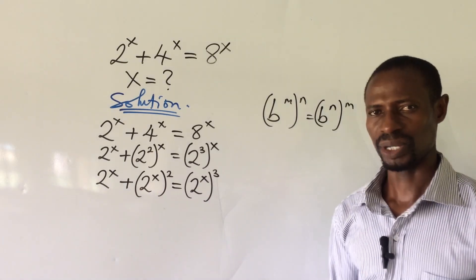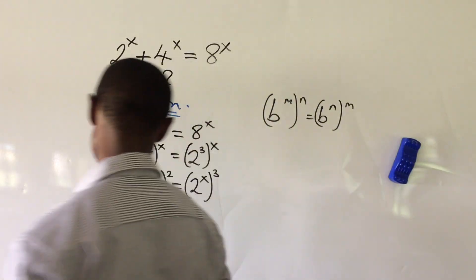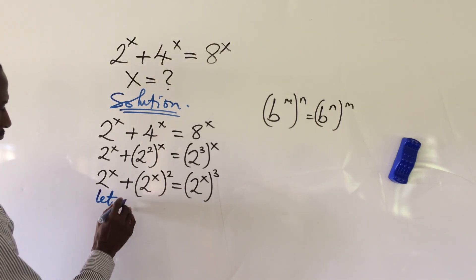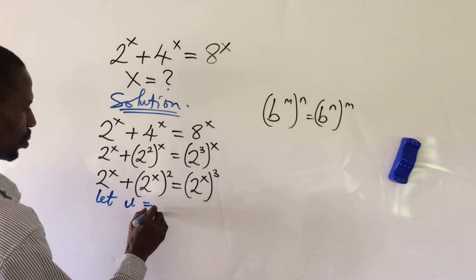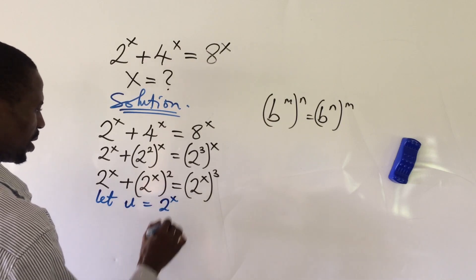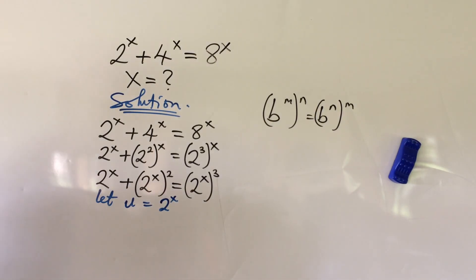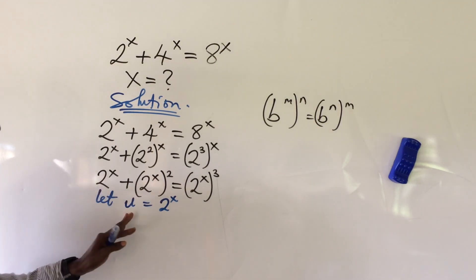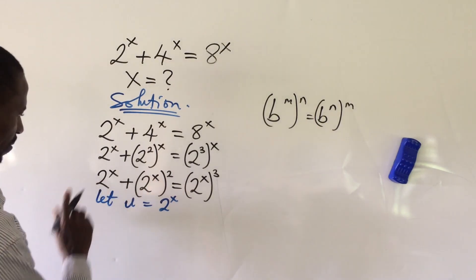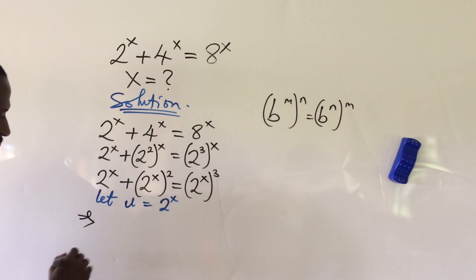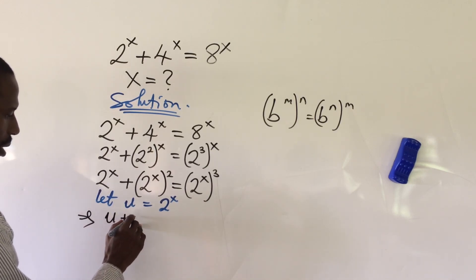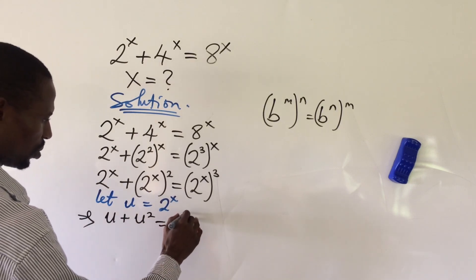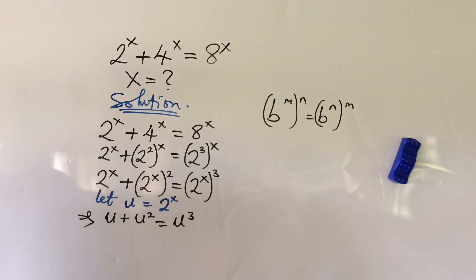We now discover that what we have inside the brackets is the same. So at this point, we can bring in another variable to represent 2 to the power of x. Let u equal 2 to the power of x. Wherever we see 2 to the power of x, let's put in u. This gives us u plus u squared equals u to the power of 3.